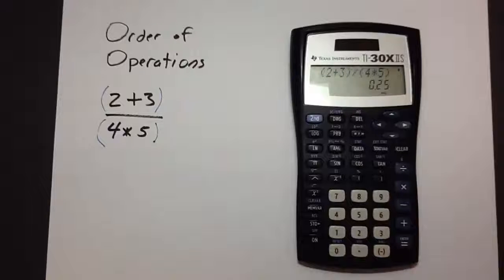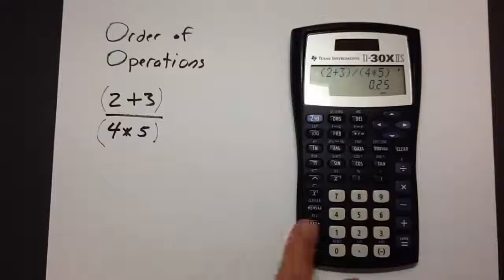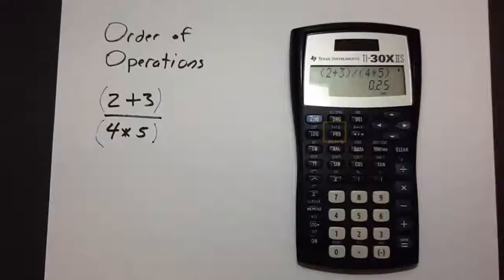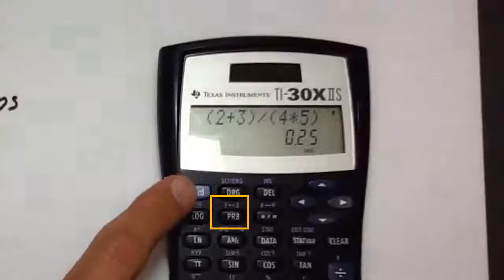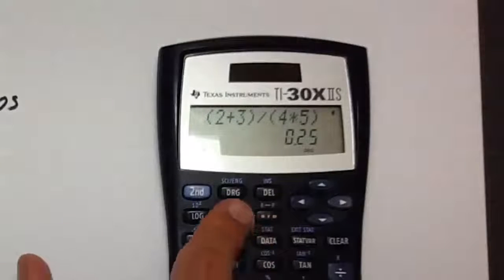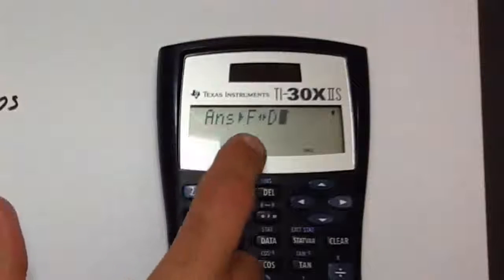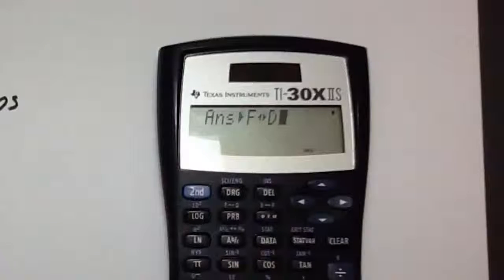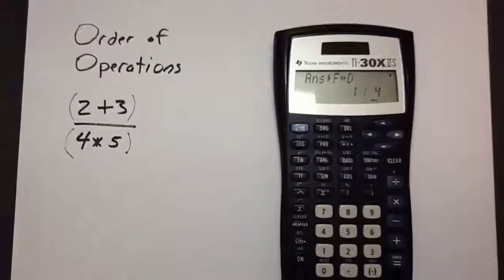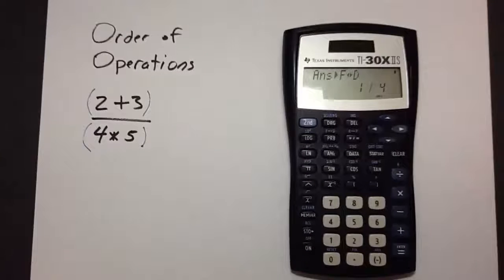This gives us 0.25. Now if you want this to change to fraction form, there is a way to do that in this calculator. It's this button here that has F-D in blue. To access this, we say second, the button in the upper left, and then F-D. This says answer arrow F-D. What this does is change any decimals to fractions. Press enter. And now the calculator gives us an answer in fractional form.